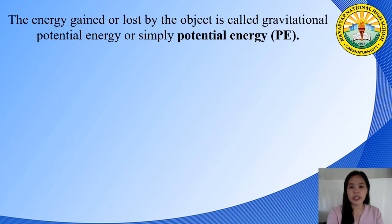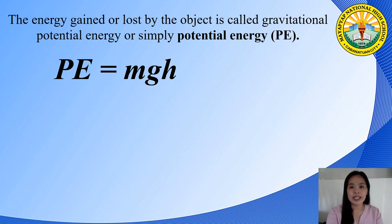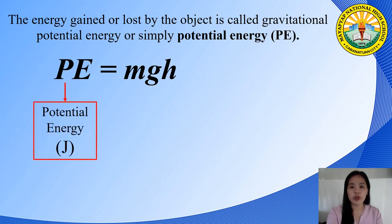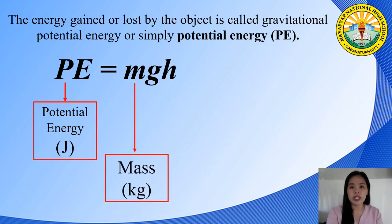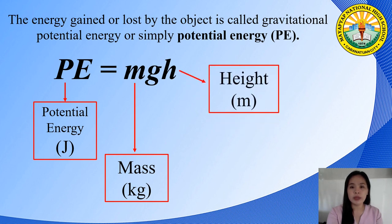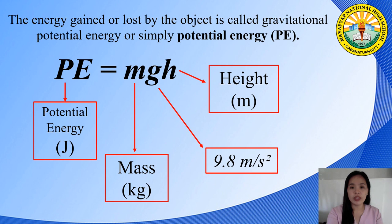The energy gained or lost by an object based on its position is called gravitational potential energy, or simply potential energy. To find the potential energy of an object, we use the equation PE = m × g × h, where PE stands for potential energy (unit: Joule), m for mass (unit: kilogram), h for height (unit: meter), and g is acceleration due to gravity with a constant value of 9.8 m/s². Potential energy is affected by the factors of mass and height.